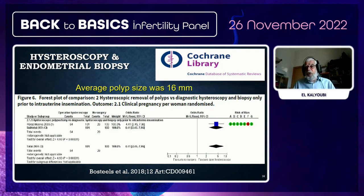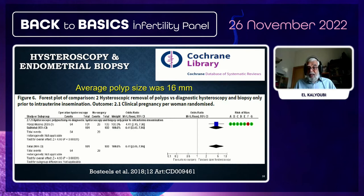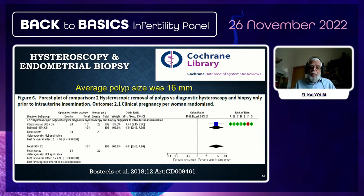Regarding endometrial polyps, a Cochrane systematic review indicates that if an endometrial polyp of around 1.6 cm is found, removing it increases the possibility of pregnancy. For smaller polyps, evidence is lacking, but in my practice, if a patient has long-standing infertility, recurrent implantation failure, or recurrent pregnancy loss, I advise immediate hysteroscopic polypectomy.